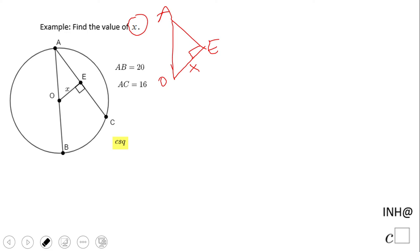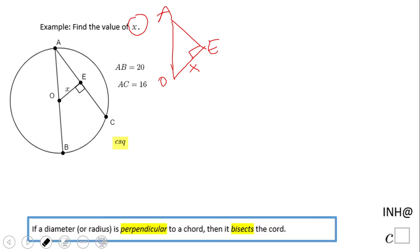We have a theorem here which says if a diameter or radius is perpendicular to a chord, it bisects the chord. So basically, this line is perpendicular on this chord, which means these two are congruent: AE is congruent to EC.